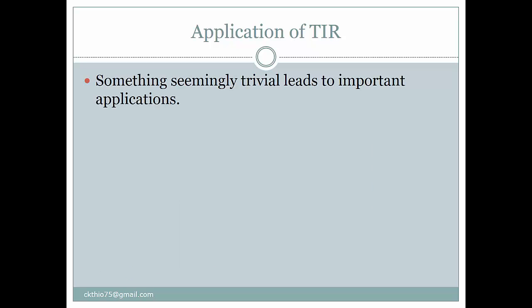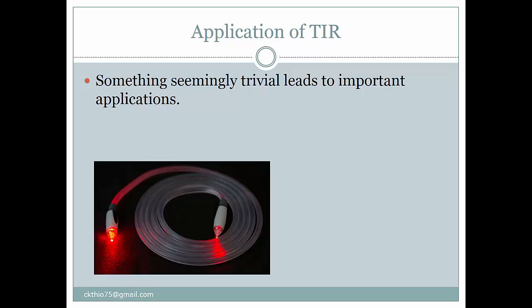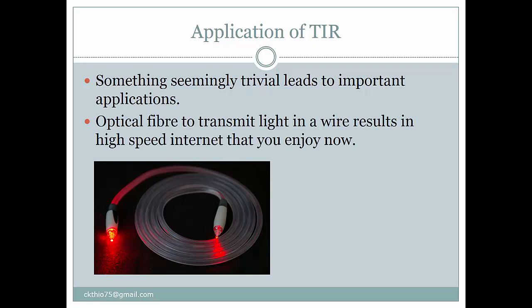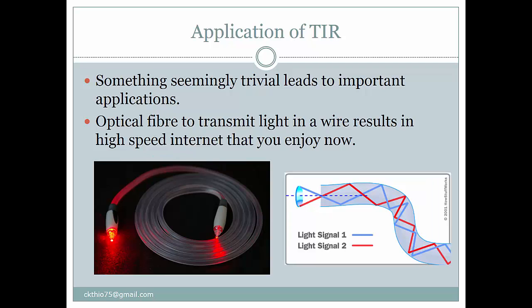Something seemingly simple actually leads to an important application: the optical fiber. Light can travel around and around a wire instead of going straight, and can be guided. This leads to transmission of light in a wire, which is the basis of high-speed internet. This is how a light ray can go around a wire.